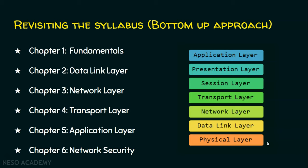Layer 1 is addressed first, layer 2 second — this is the bottom-up approach. In this computer networking course, we will deal with the physical layer first, then data link layer, then network layer, then transport layer, and finally the application layer and security. That is why the syllabus mentions a bottom-up approach.